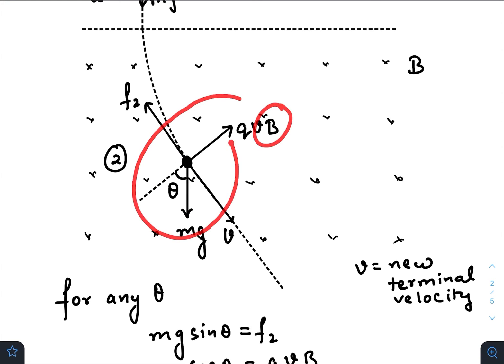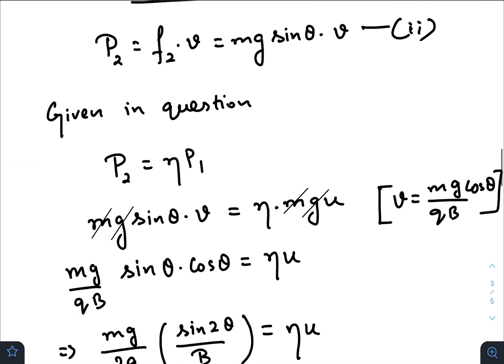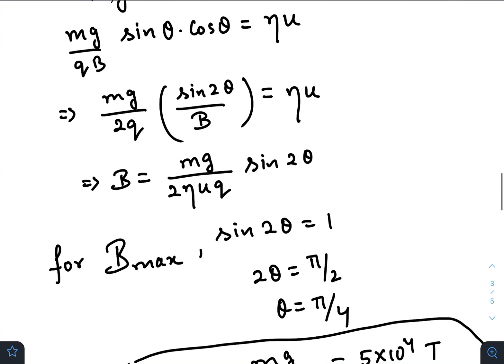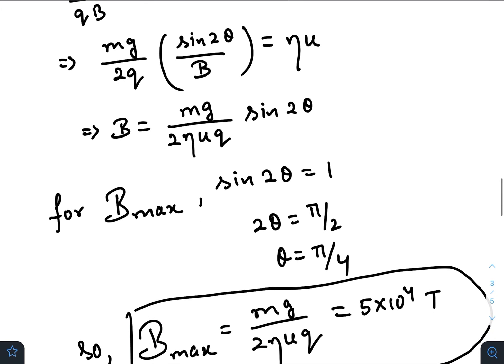And how the value of B is changing with theta, it follows this relation. Now as you can see that the dependency of B on theta is somewhat sinusoidal.